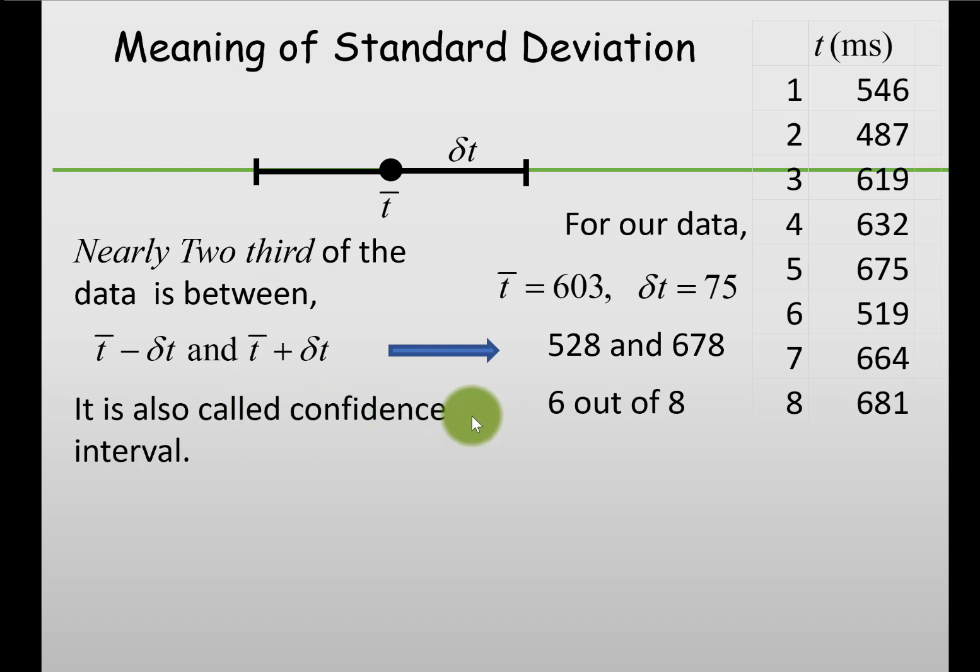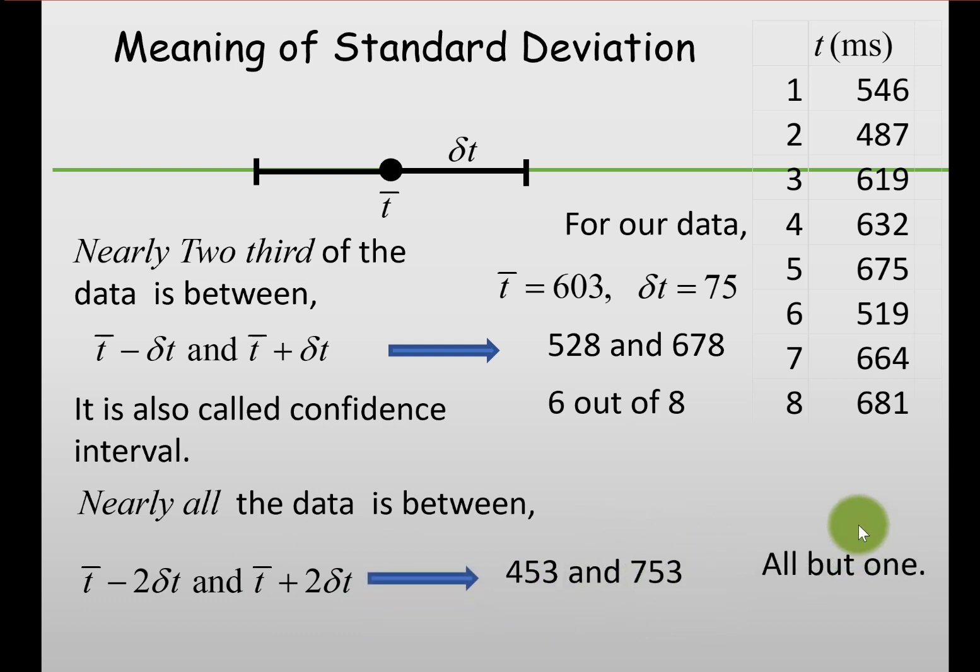If we want to increase the confidence level, we can increase this interval. Rather than taking the interval with one standard deviation, we can use an interval with two standard deviations. In that case, in our example, we get a larger interval. All of them are in this interval except one, which is 487. For this interval our confidence level is nearly 100 percent, more precisely it is 95 percent.